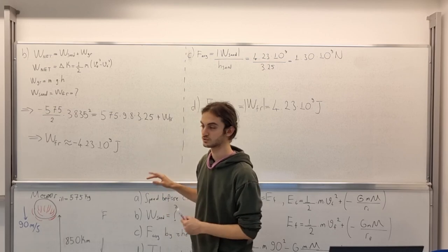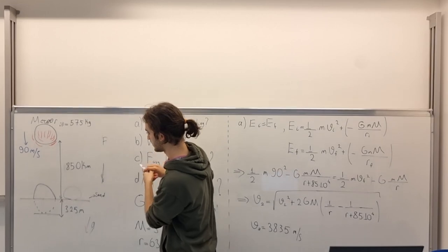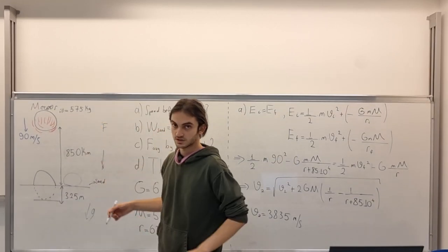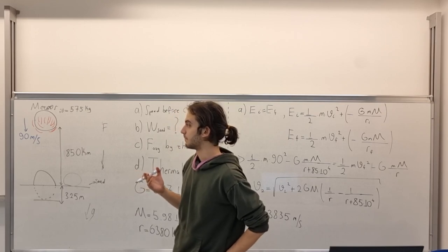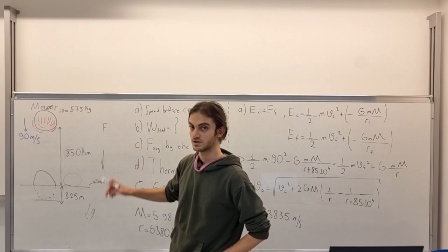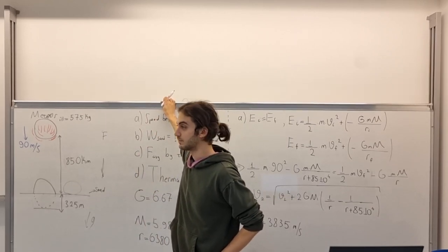Why minus? Because remember, the object is going downwards, aka you might say minus y direction. But friction is pointing upwards in the plus y direction. That's why we have a minus sign there.